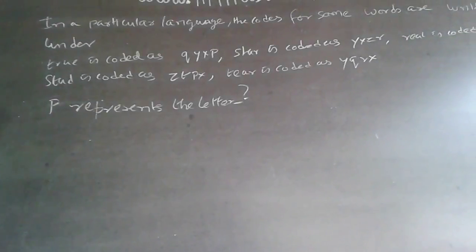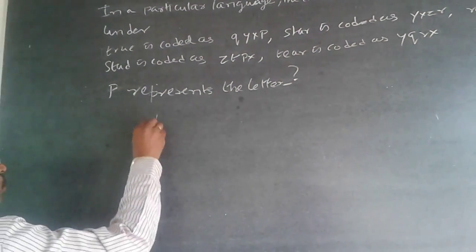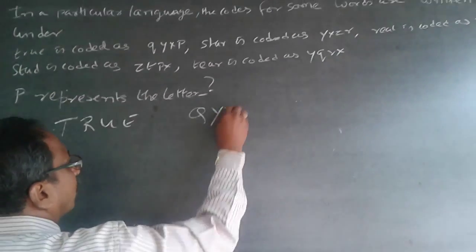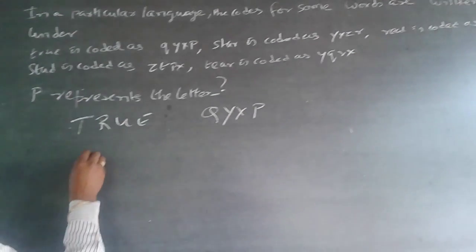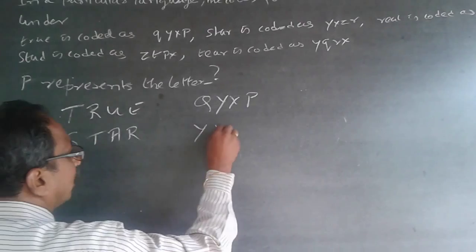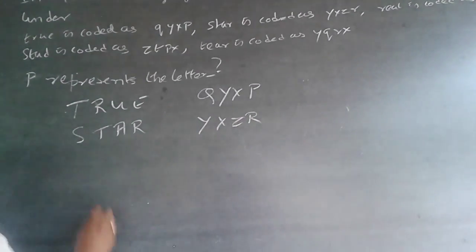For this purpose of explanation, write it in capital letters. TRUE is given as QYXP. STAR is given as YXZR.